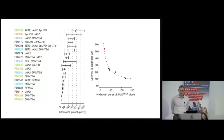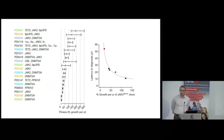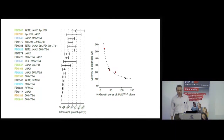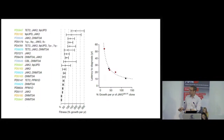Question from the audience: How do you measure the JAK2 mutation if people won't show any symptoms? In the population study, this was a population survey — samples taken for other reasons across thousands of people as part of a research study — so these were people with entirely normal blood counts.